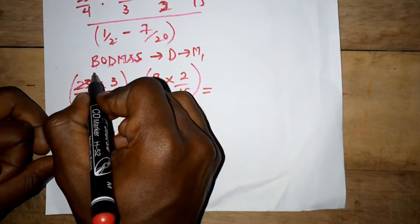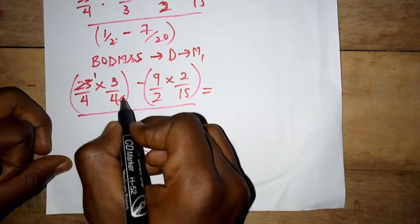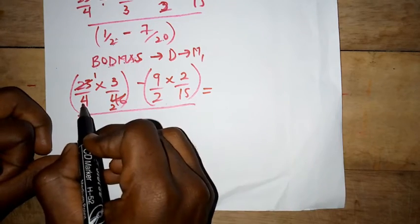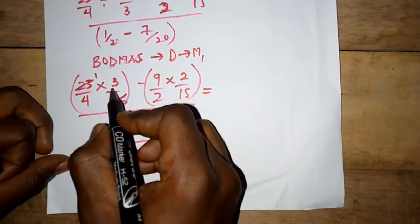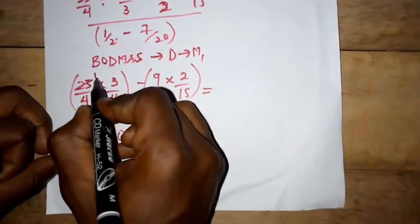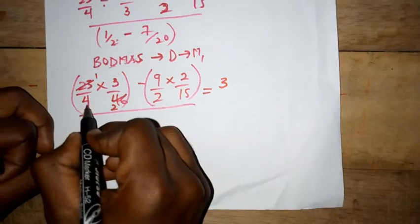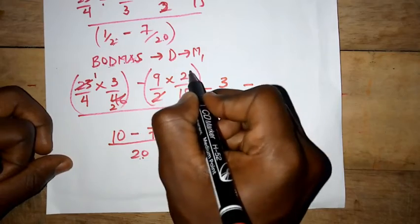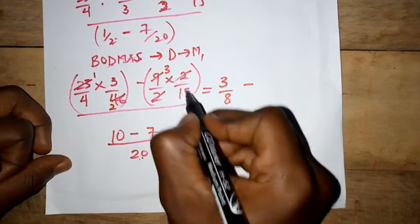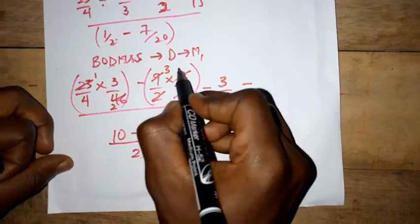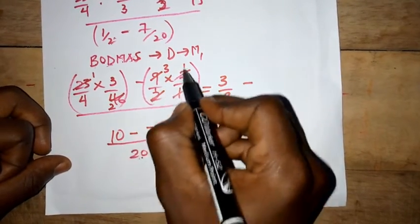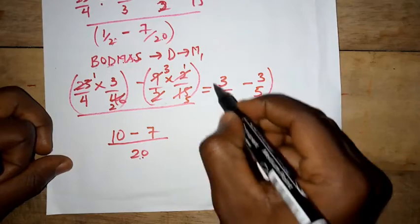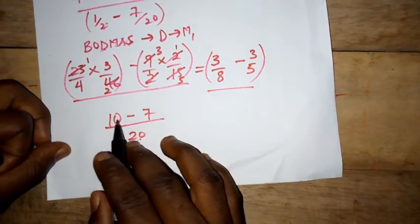23 cancels itself — 1 goes into 46 twice. 3 cannot go into 4 to get a whole number, so we have 1 times 3 which is 3, and 4 times 2 is 8. Then 2 cancels out of 2, 3 and 3 gives 5. So we have 3 times 1 is 3, and 1 times 5 is 5. Also 10 minus 7 is 3 over 20.